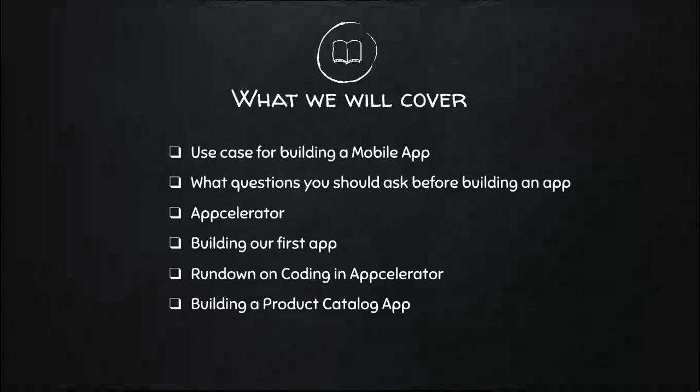We're going to look at what questions we need to ask ourselves before we build an app — you don't want to just jump in and build a mobile application. We're going to look at AppCelerator, one of many third-party cross-platform tools that let you write essentially one mobile application but deploy to multiple platforms, similar to how Java works with its JVM. We're also going to build our first app in AppCelerator, run down how the code framework works, and the project structure — HTML, JavaScript, CSS — and combine our product catalog into the application.